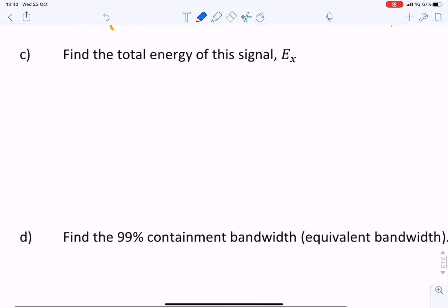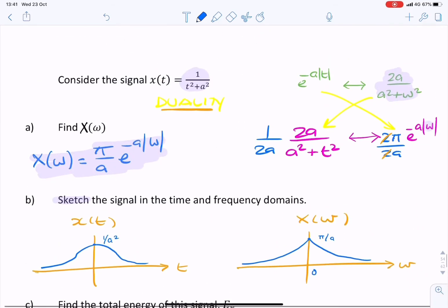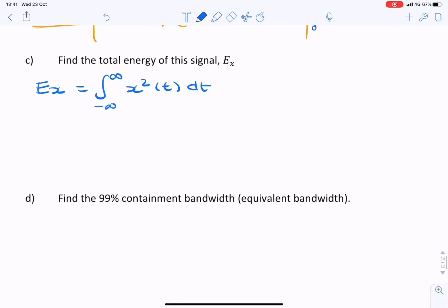Parseval's theorem states that we can find the energy either in the time domain or in the frequency domain. So I could integrate from minus infinity to infinity, x squared of t dt, but this is x(t). x squared will be much harder to integrate than the exponential here of x(ω). So using Parseval's theorem, we can actually choose whether to integrate in time or frequency. And I choose to integrate in frequency.